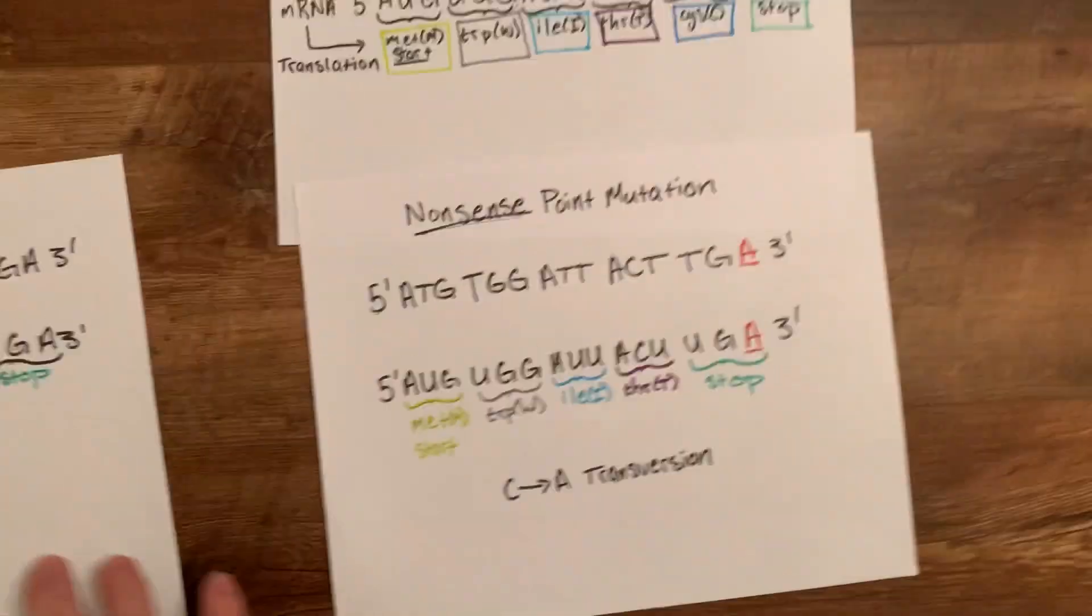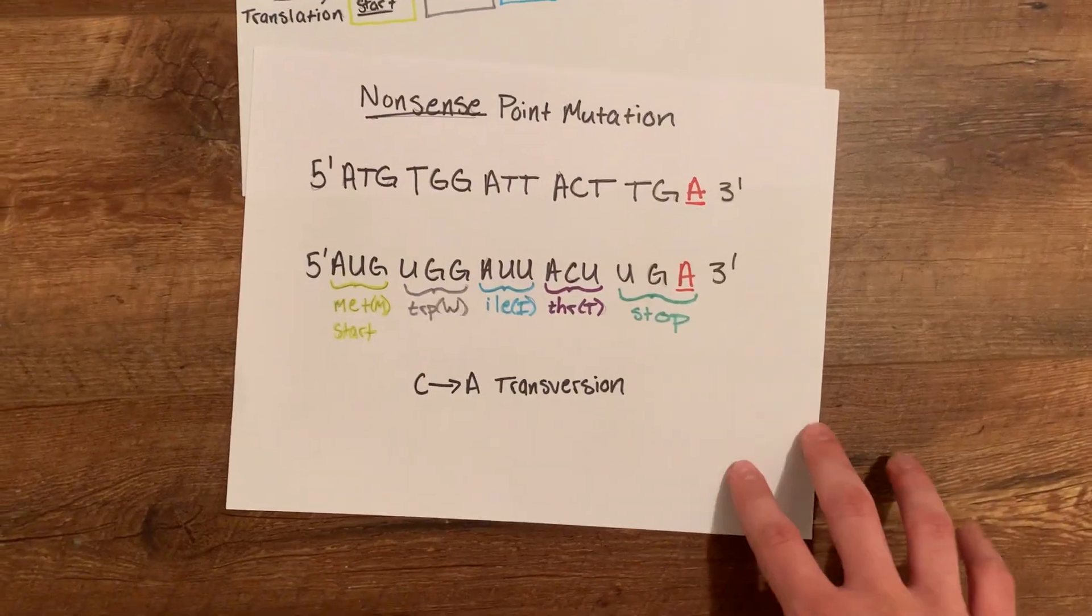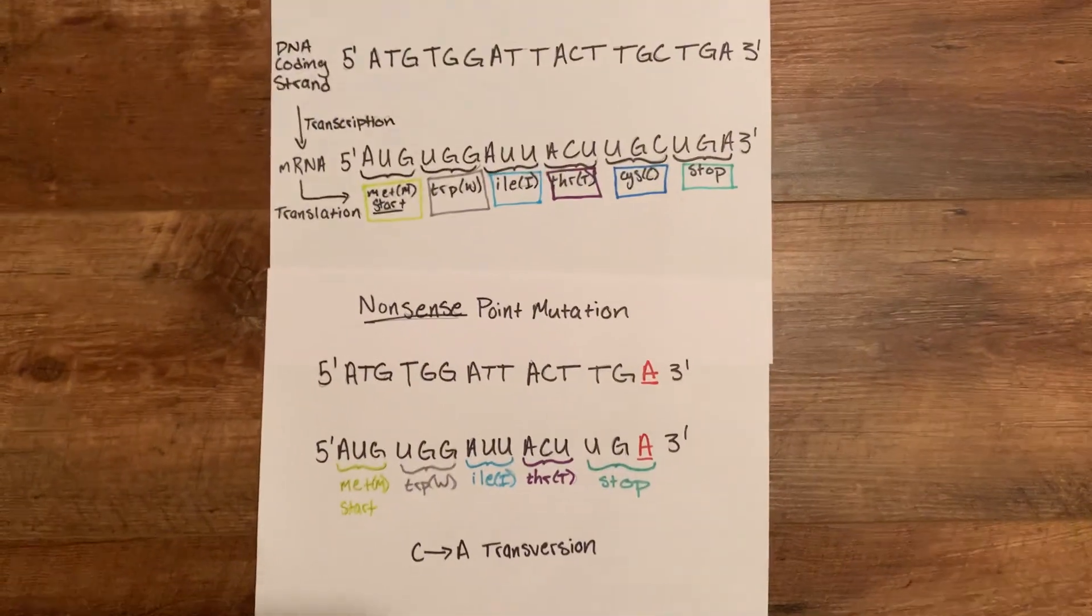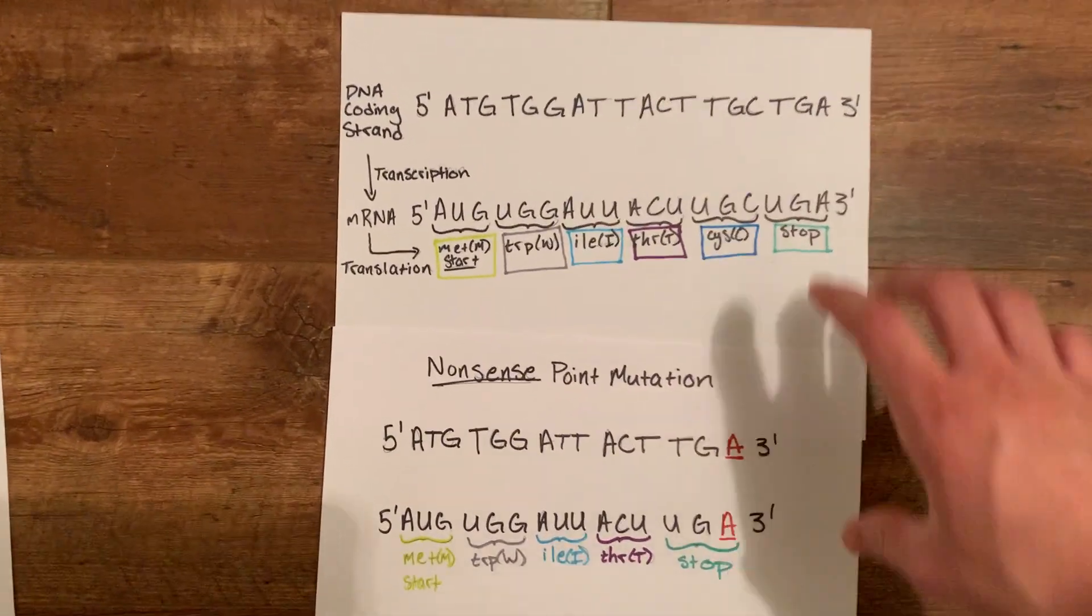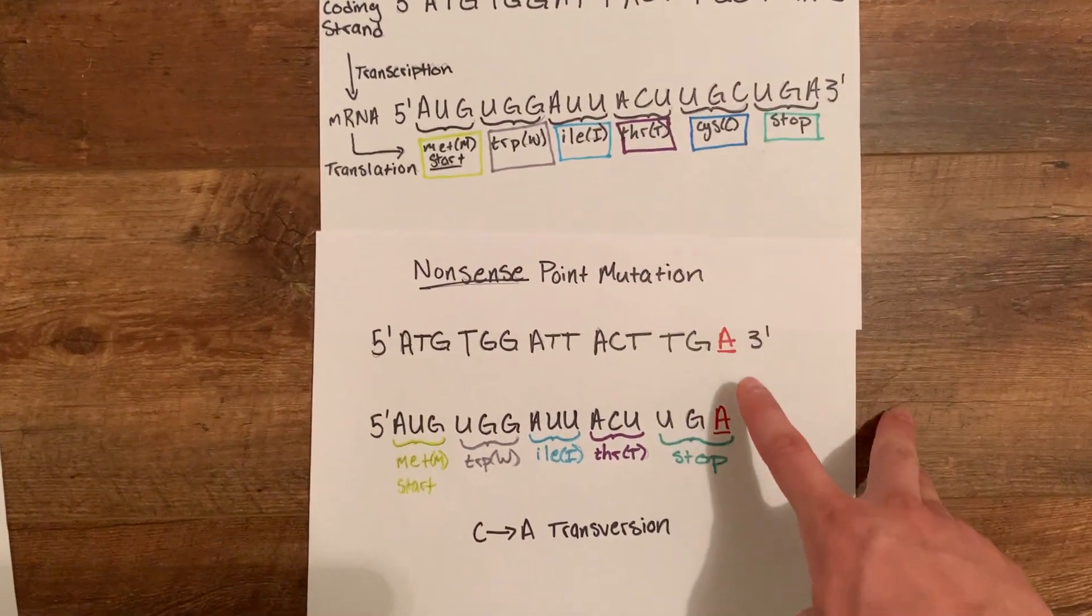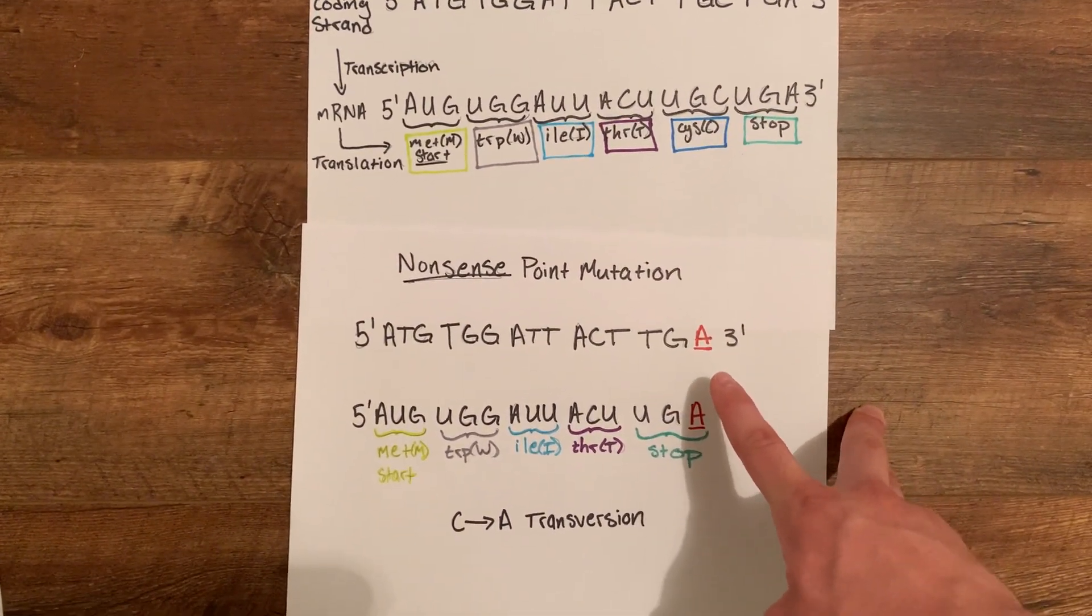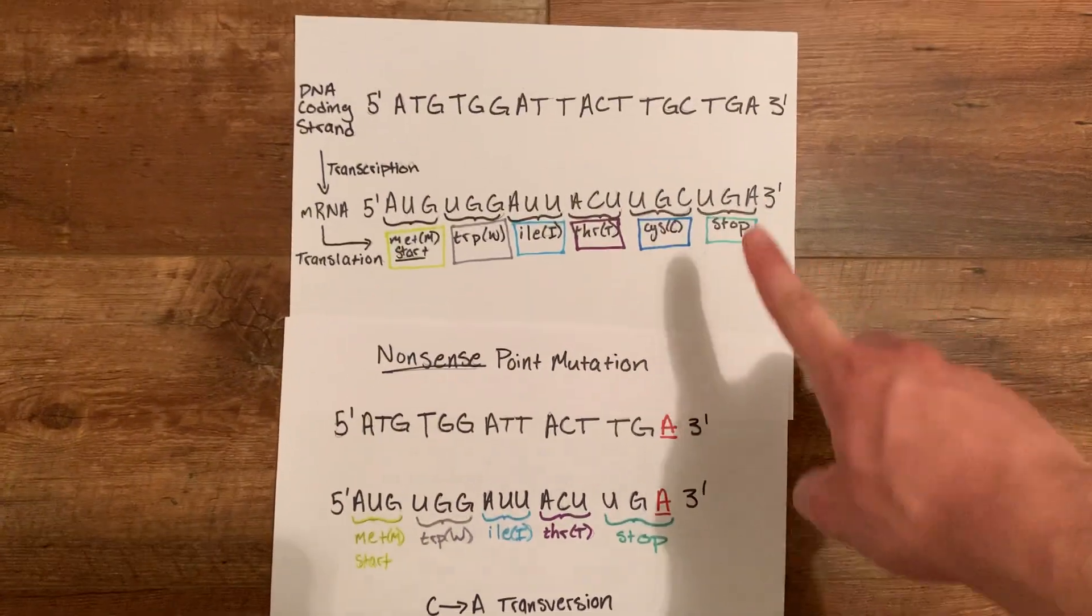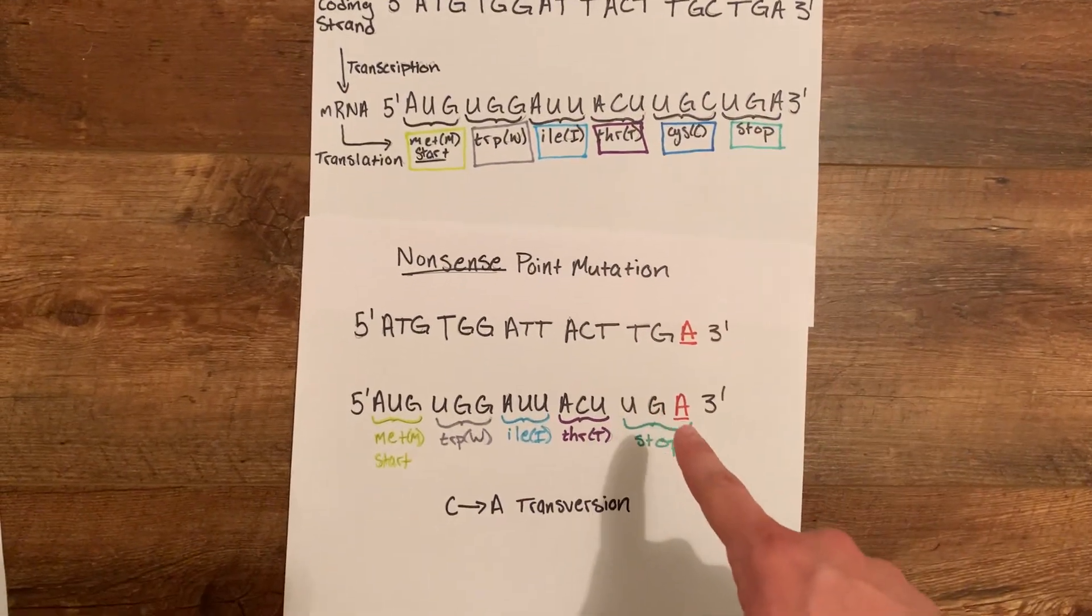Now we're going to look at a nonsense point mutation. This is another replacement of a base. So initially we had C at this point and now we're replacing it with an A.